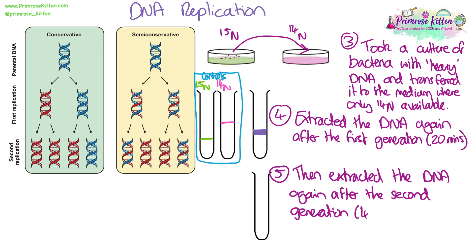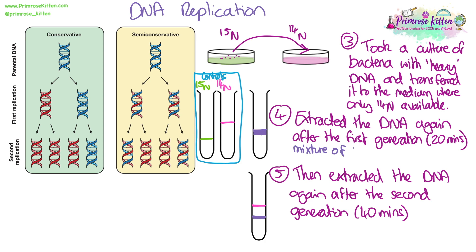They then did the same again after the second generation — about 40 to 60 minutes later, once all the bacteria had doubled again. This time they saw two bands: one light band in the same position as the nitrogen-14 control, and one slightly thinner band still in the middle position. So in the first generation the DNA was mixed between nitrogen-15 and nitrogen-14 — a mixture of light and heavy DNA creating a thick band in the middle, neither completely light nor completely heavy.